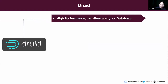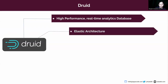Druid is basically a high-performance real-time analytics database that delivers sub-second queries on streaming and batch data at scale and under load. Most often, Druid powers use cases where real-time ingestion, fast query performance, and high uptime are important. Druid has an elastic architecture, which means the components of Druid are loosely coupled, with components for ingestion, query, and orchestration.